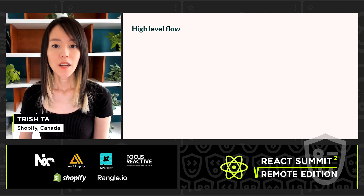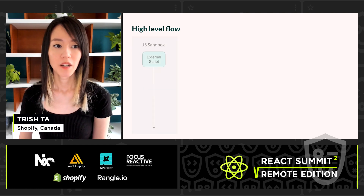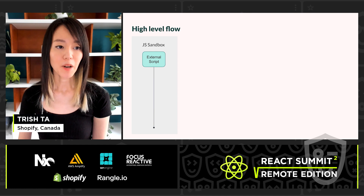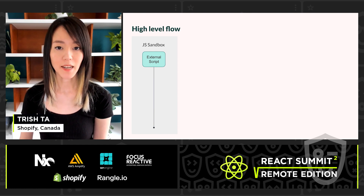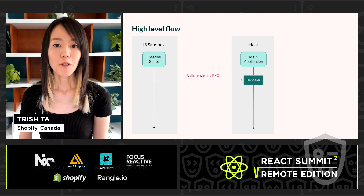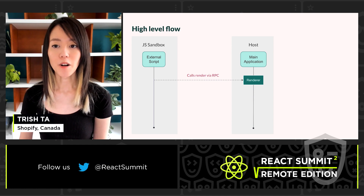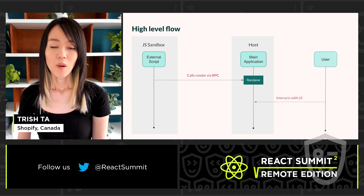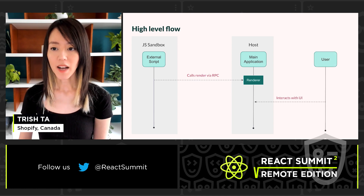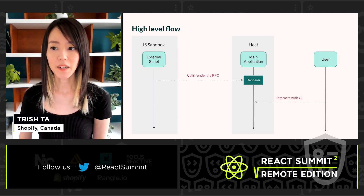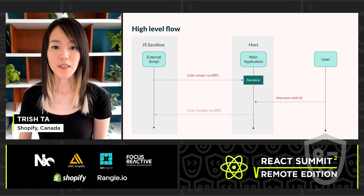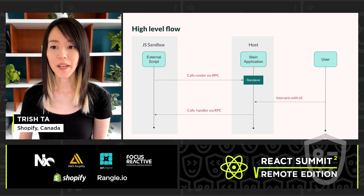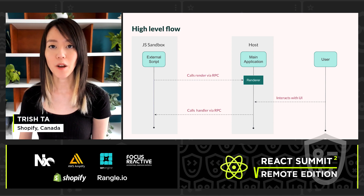At a high level, we have a JavaScript sandbox that loads an external script inside of it. Through an RPC proxy, the script can call to render UI inside the main application. When a user interacts with the UI, for example clicking on a button, if the handler is defined inside the external script, the main application can call the handler through the RPC layer.